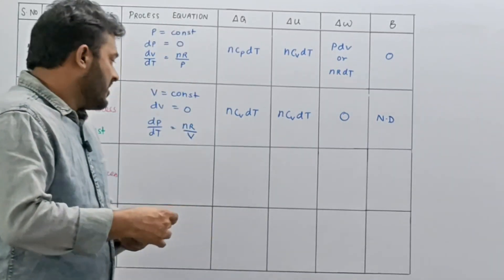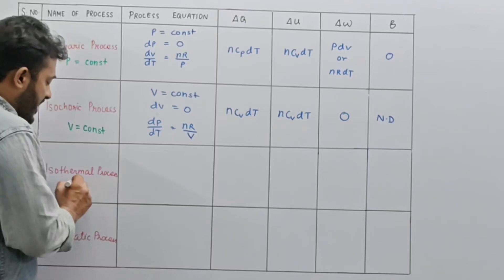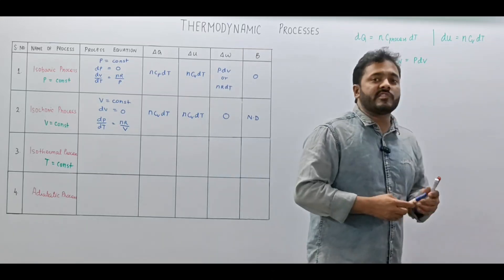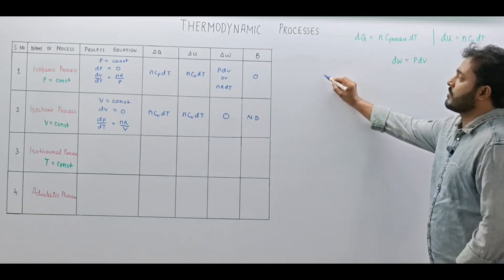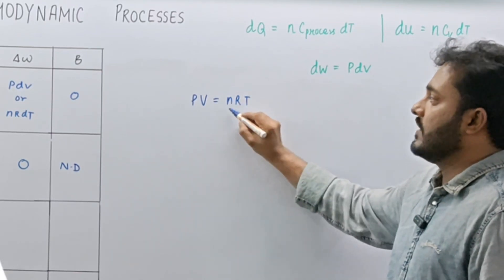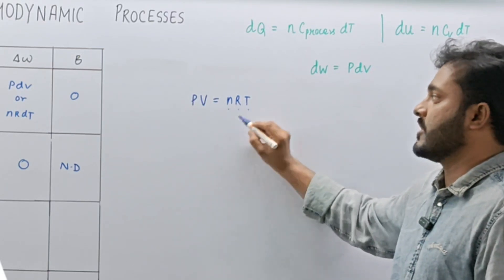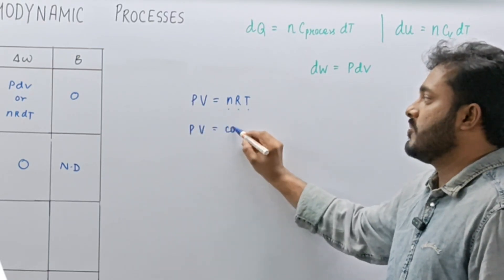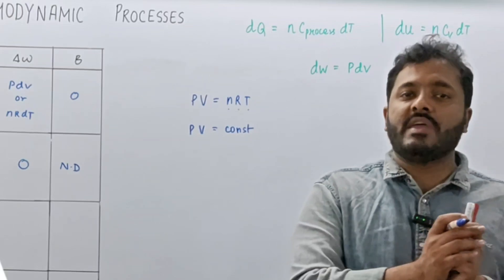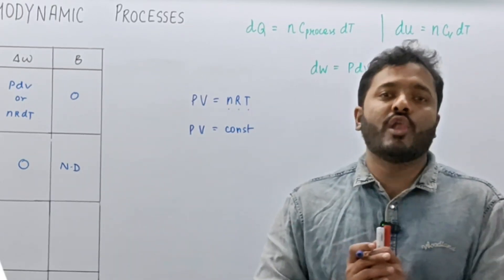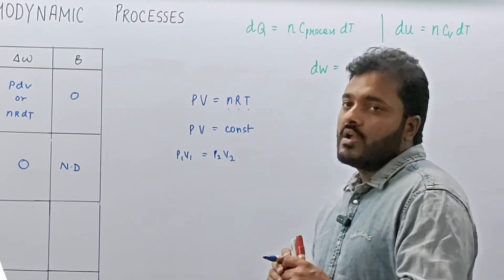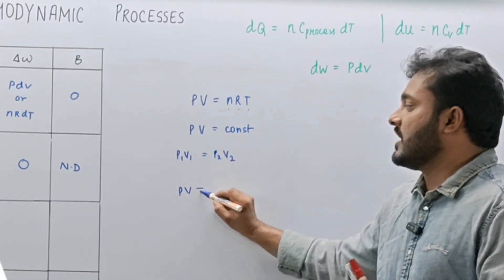Now let us deal with the isothermal process. Isothermal process is a condition in which temperature is kept constant. We write PV equals NRT; if temperature is constant, then N, R, and T are all constant, making PV equal to a constant. If the gas moves from state point P1V1 to P2V2 following an isothermal curve, then P1V1 equals P2V2.